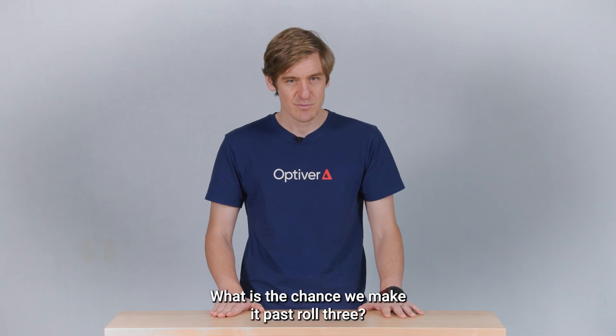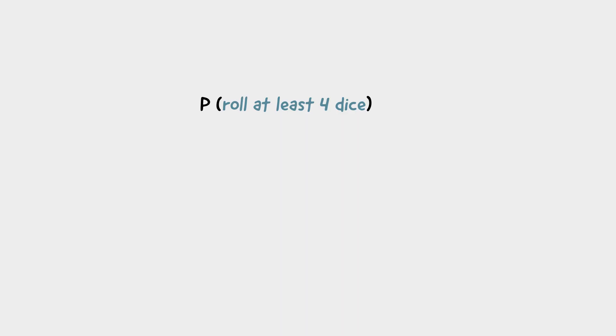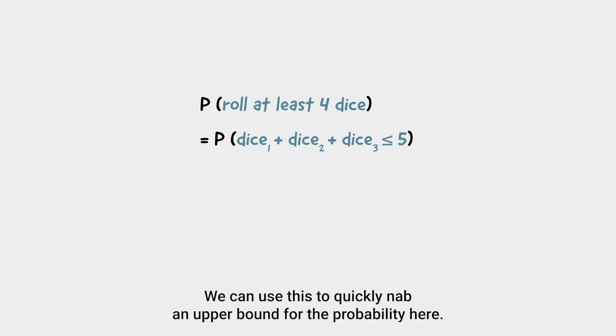What is the chance we make it past roll three? Very small. To keep going beyond three rolls, the first three rolls are required to sum to at most five. This forces all of the dice rolls to be quite small in value. In fact, none of them are allowed to be four or greater. And that knocks off half the outcomes for each dice.